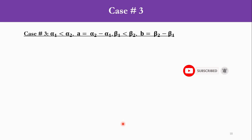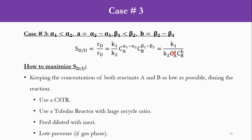Case 3: α1 < α2 and β1 < β2. Here A = α2 - α1 and B = β2 - β1. Both Ca and Cb go to the denominator, giving S_D/U = K1/K2 / (Ca^A * Cb^B). This means we must keep the concentration of both reactants A and B low. We can select either a CSTR, a tubular reactor with a large recycle ratio, feed diluted with inert, or for a gas phase system operate at low pressure.